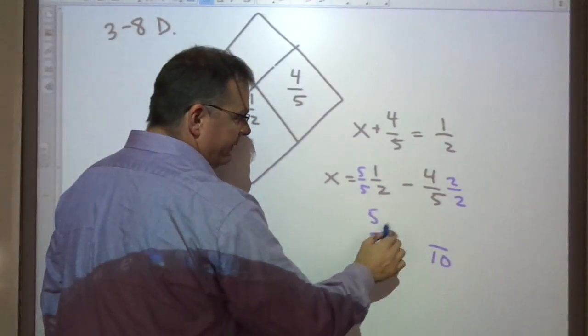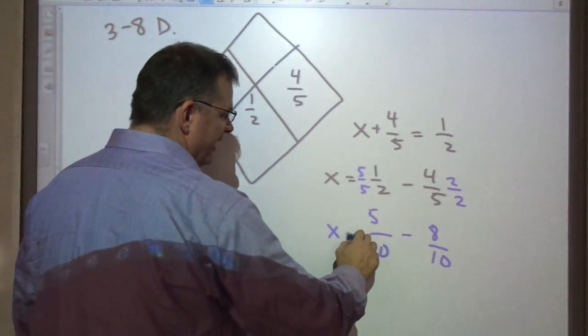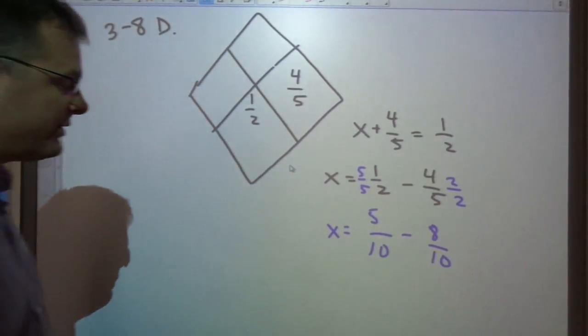That would give me 5 times 1 here. 4 times 2 there is 8. So x is equal to 5 tenths minus 8 tenths.